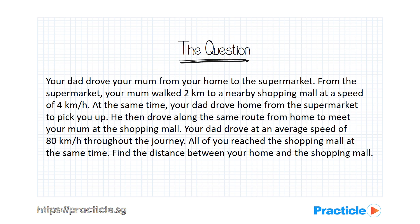So instead of going through the words a few times and trying to figure out what is going on, let's make our life easier by drawing a diagram to summarize everything. We will do it together step by step. When we talk about speed questions, the first thing that comes to mind would be some people or some objects moving. So since we know that people and objects are involved in this question, we need to know how many people or objects there are and who or what they are.